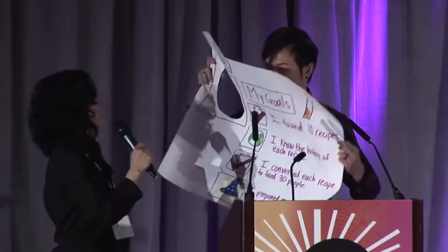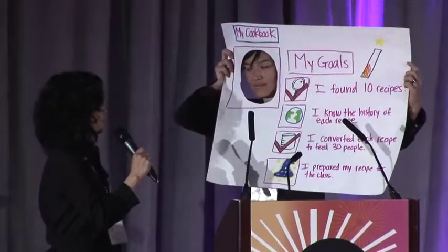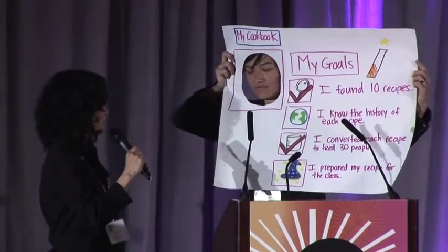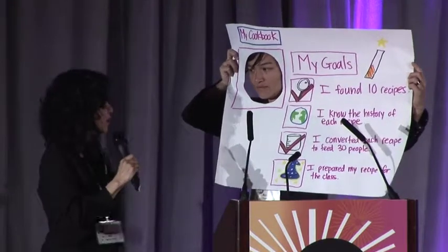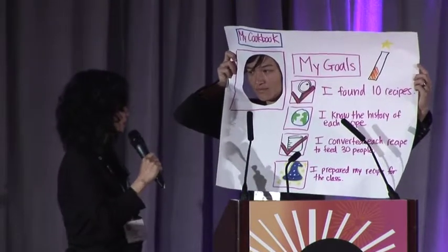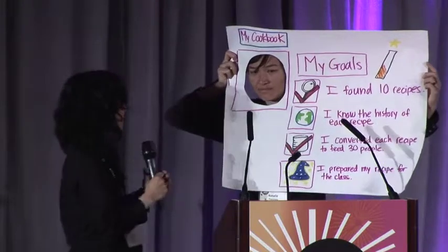I'm going to ask Natalie from the group a couple of questions. In the meantime, I was wondering if group two — Pandora for Learning — could come up and set up. We will transition to you as soon as you're ready. I see you're holding a sign there. It says: my cookbook, my goals, I found 10 recipes, I know the history of each recipe, I converted each recipe to feed 30 people, and I prepared my recipe for class. Can you tell me what this is supposed to be?